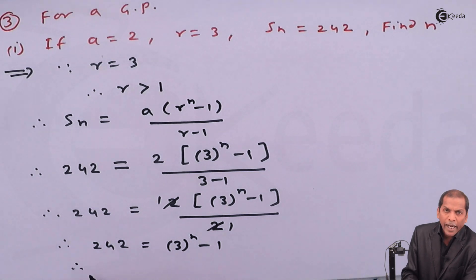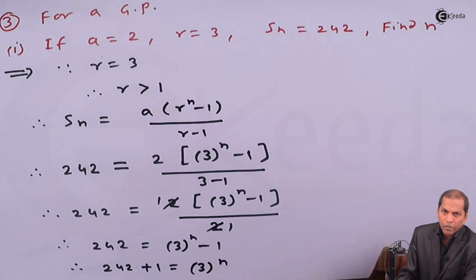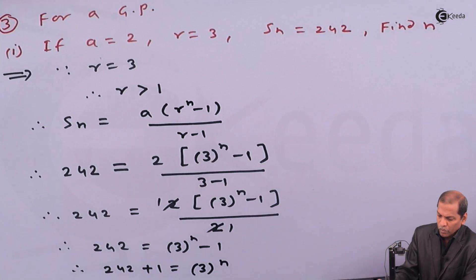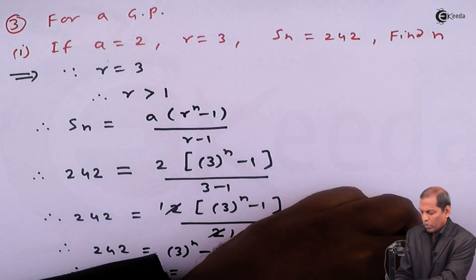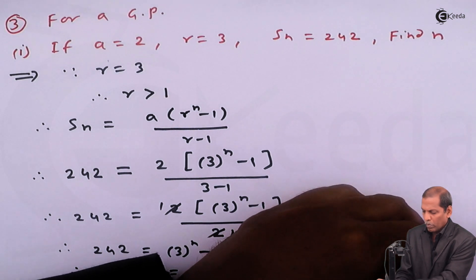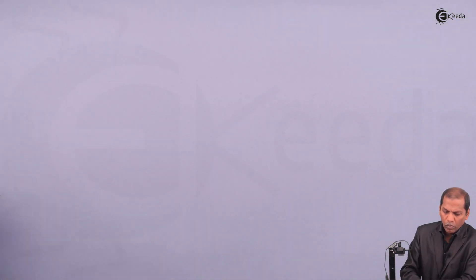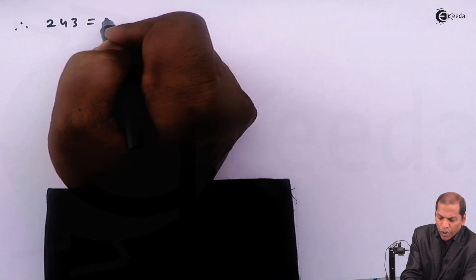The next step will be 242 plus 1 is equal to 3 raise n. Therefore the next step will be 243 is equal to 3 raise n.